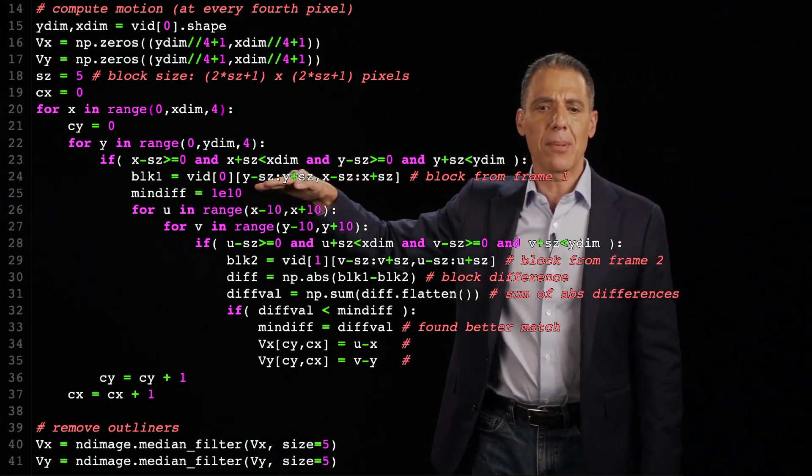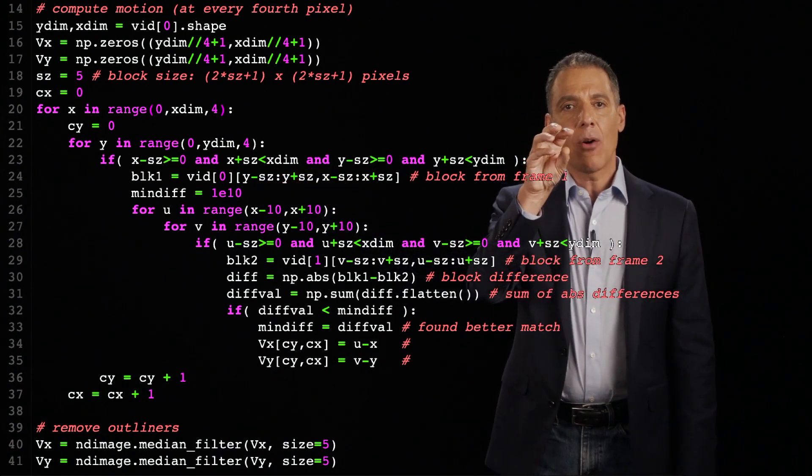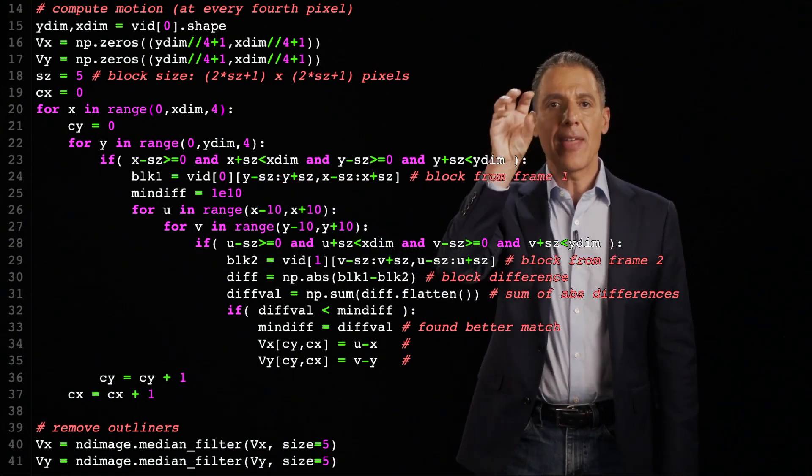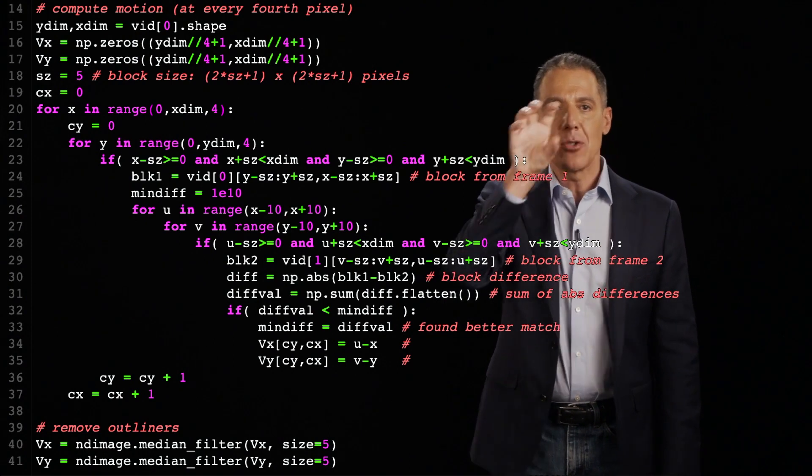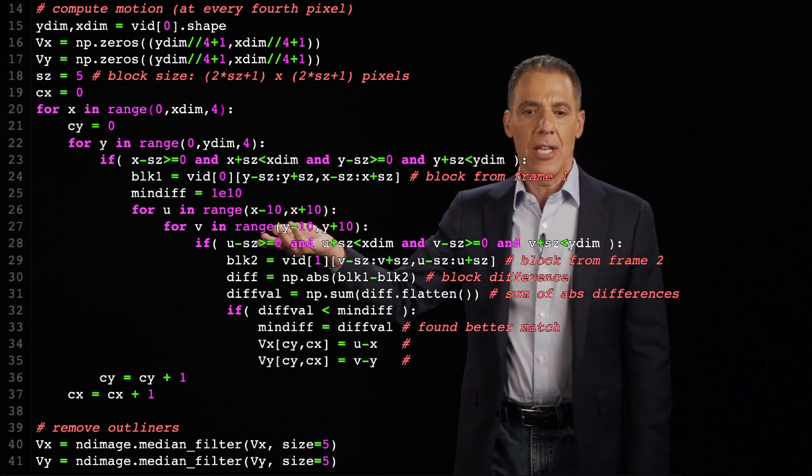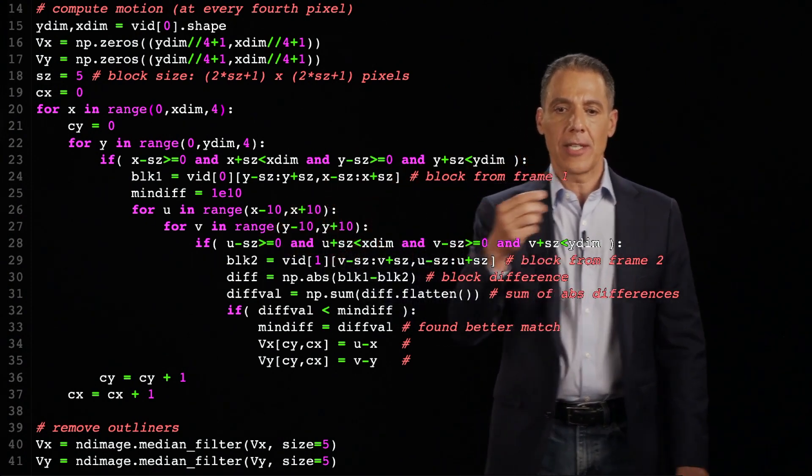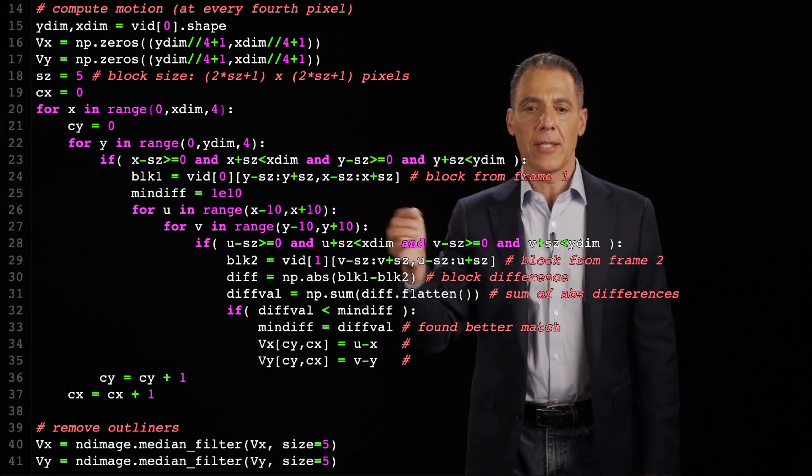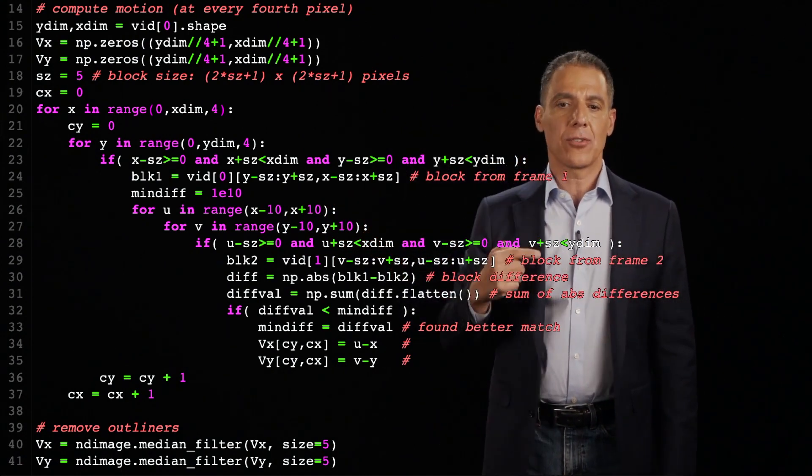So I grabbed that block right there. And that's what I now at time one, I need to find that at time two. And I'm going to do that using that little grid search. So these two for loops are searching 10 pixels to the left, 10 pixels to the right, 10 pixels above, 10 pixels down.